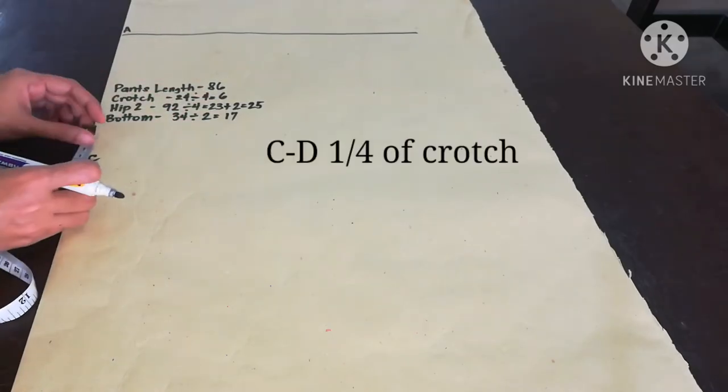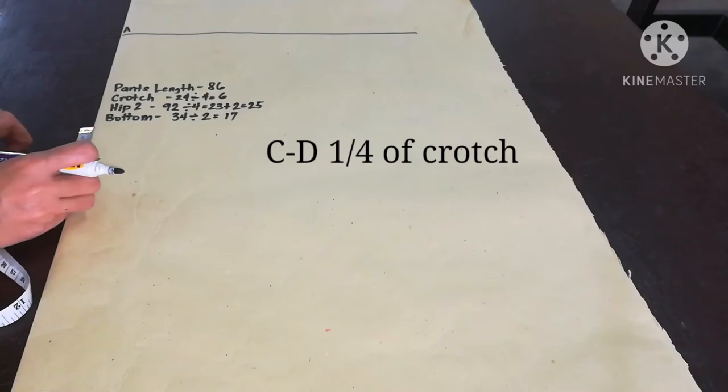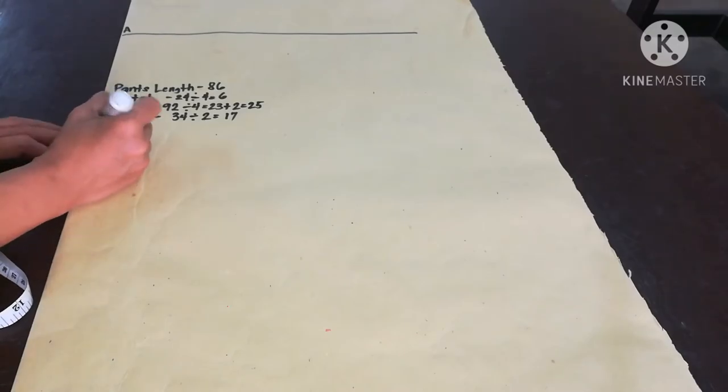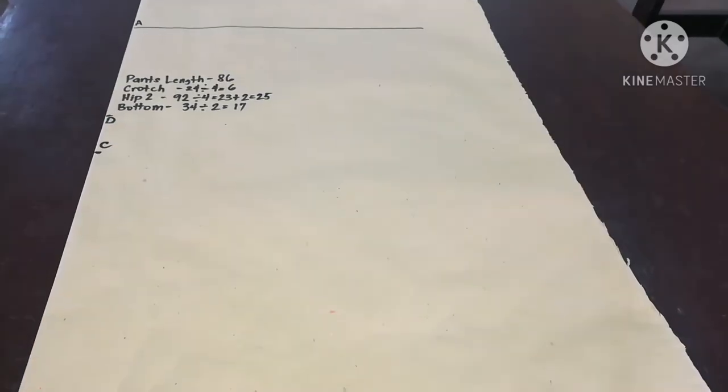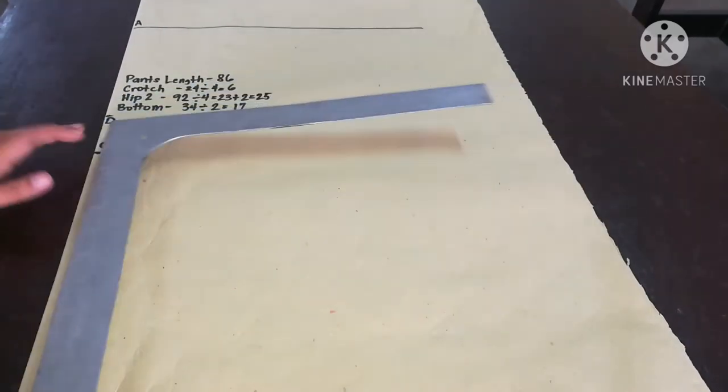C to D is 1/4th of crotch. Measure it upward from C. In my example, it is 6 cm. And then square out points D and C.